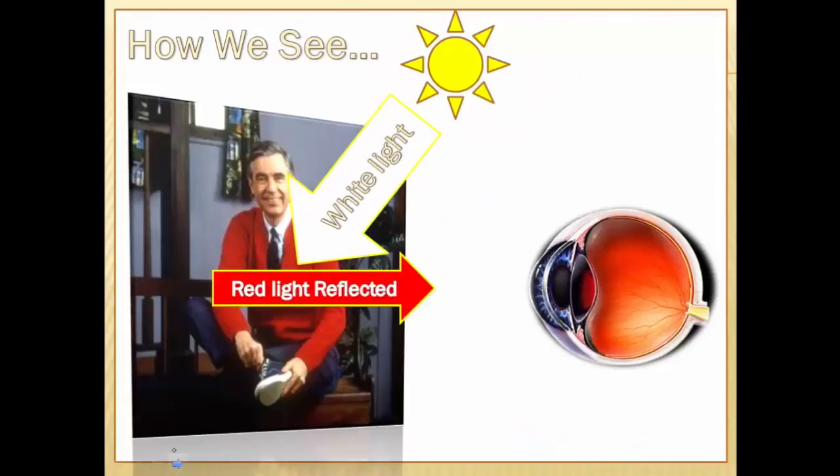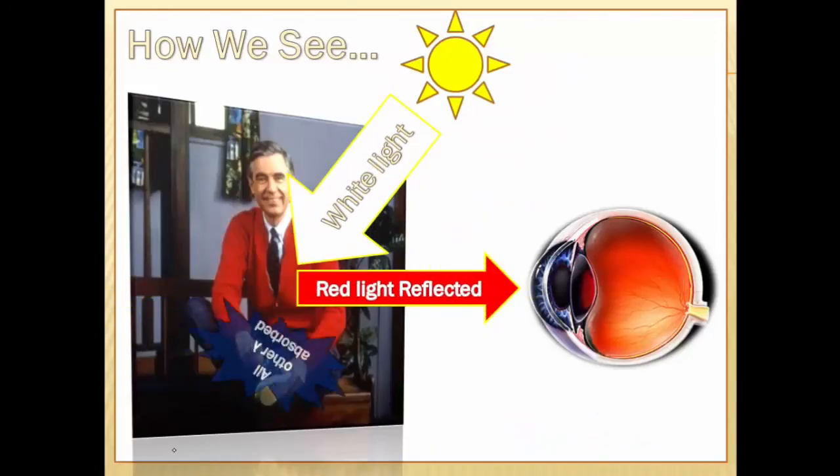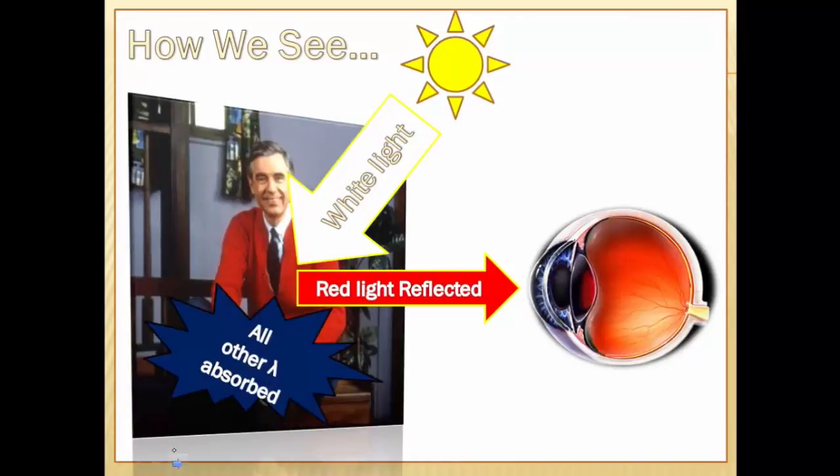Either way, the important thing is we can see this light. And how do we see light? Well, it's simple. The object emits light. It's white light. It's going to reflect off of an object or a material. What's going to happen is it's going to absorb some of the light and it's going to reflect some of the other light. In our case, we're looking at our dear friend Mr. Rogers here and the white light hits his sweater and it only reflects red light, which means the rest of the light has been absorbed.